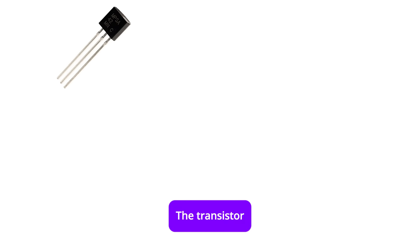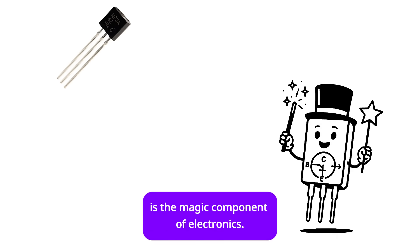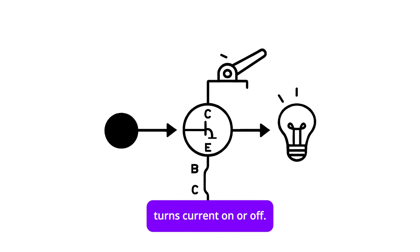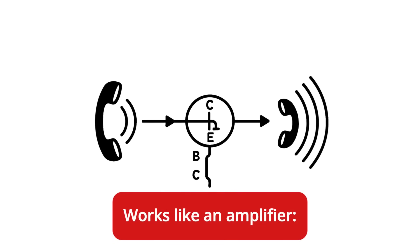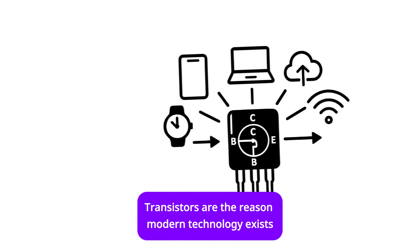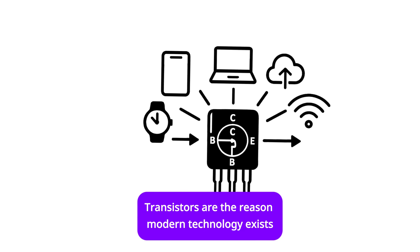Transistor. The transistor is the magic component of electronics. Works like a switch: turns current on or off. Works like an amplifier: makes small signals much stronger. Transistors are the reason modern technology exists.